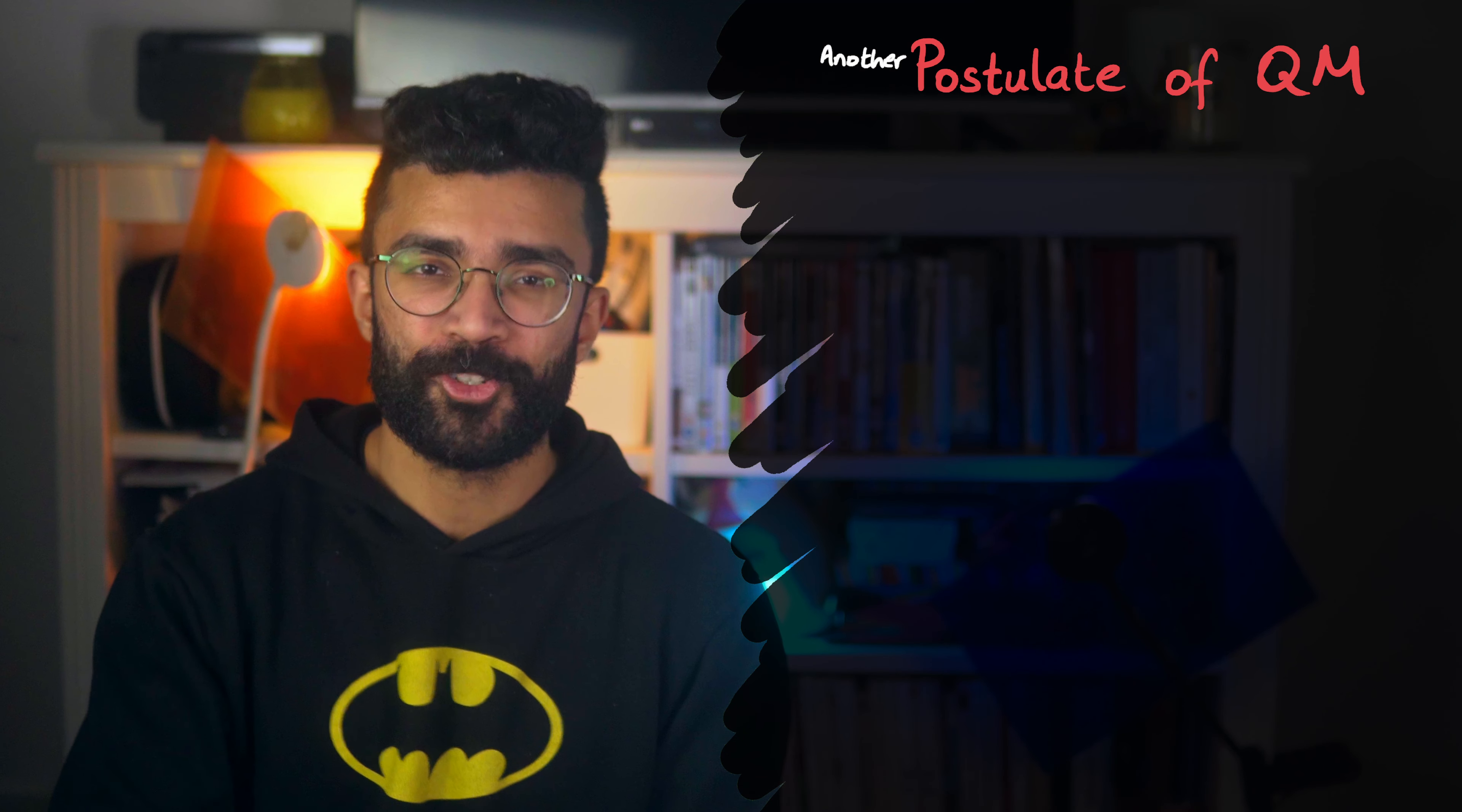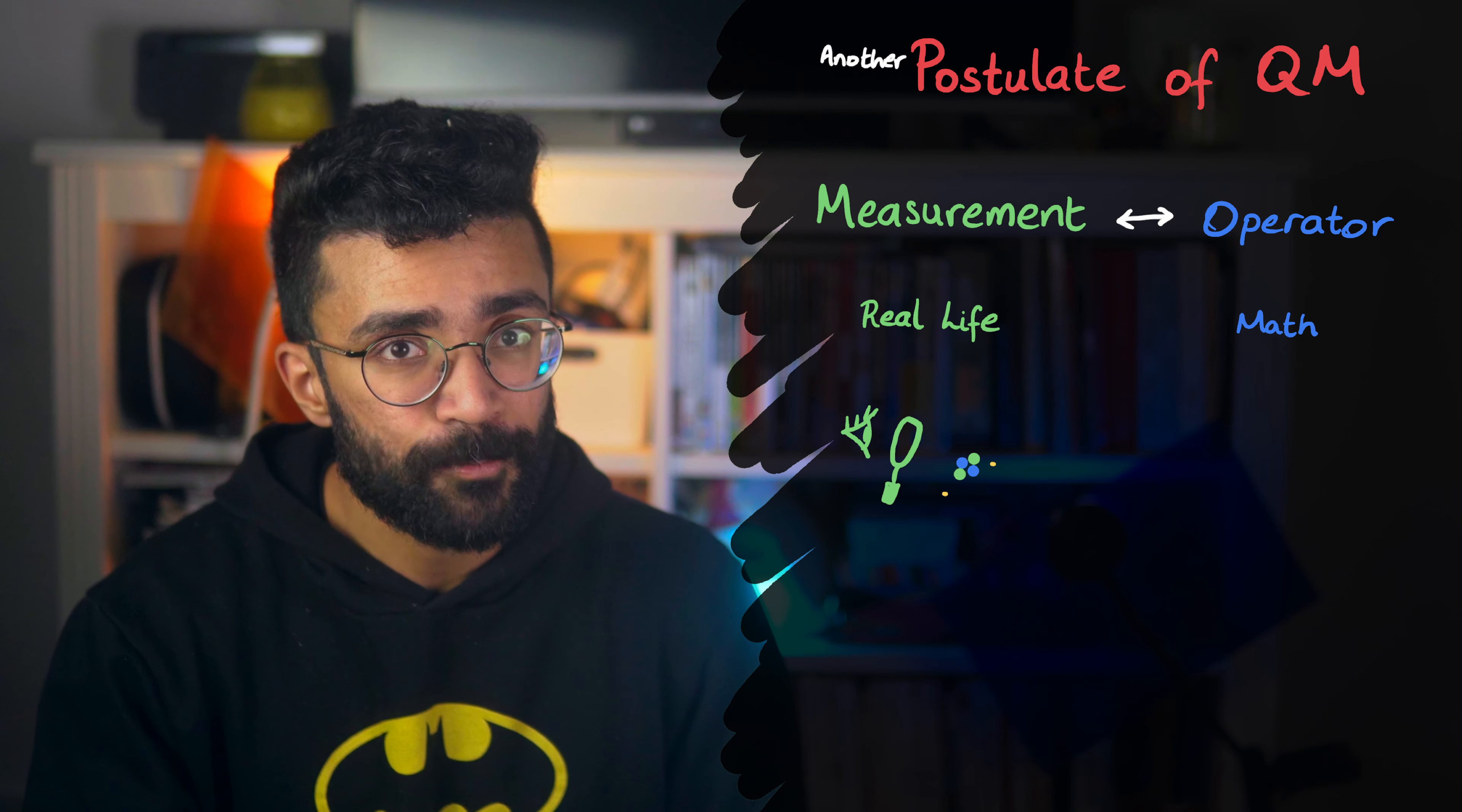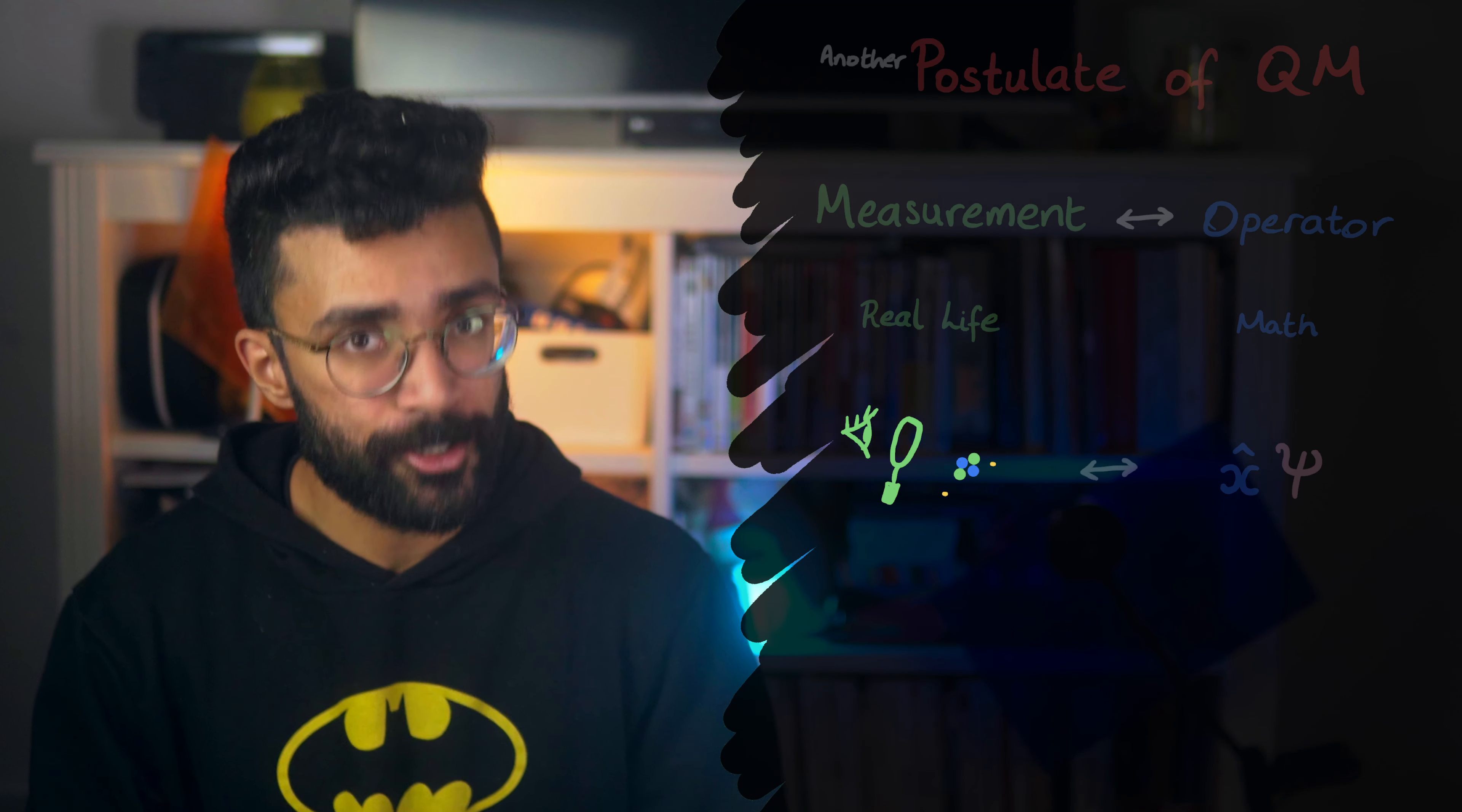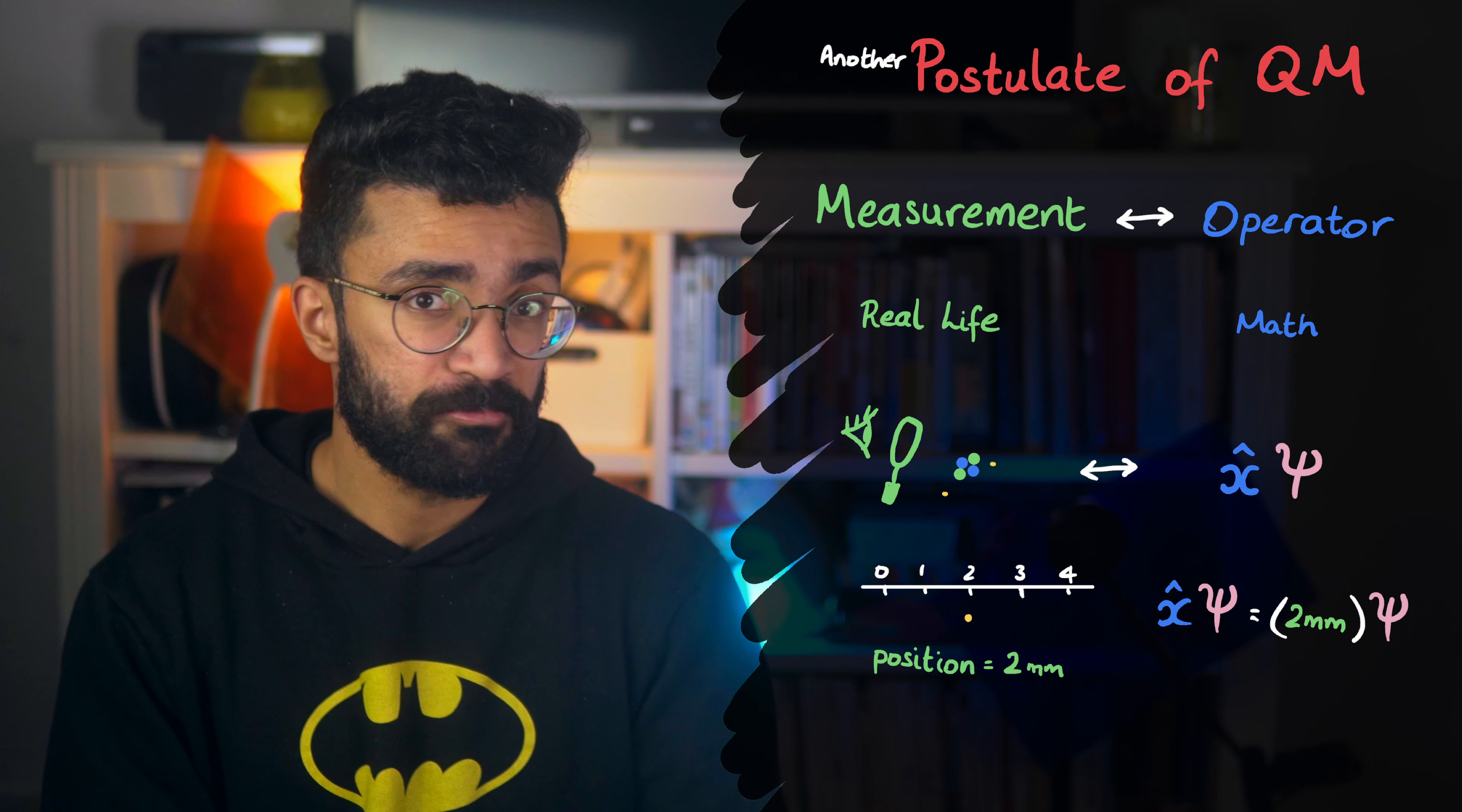Another example of this is a postulate that links together measurements we can make on the real system with these mathematical objects called operators. If we make a measurement on our real system, the mathematical equivalent is applying a particular operator to the wave function of the system. In other words, writing this is equivalent to making a measurement. And what I mean by that is that the result of this mathematically corresponds to what we would see after making a measurement in real life. But why an operator should be equivalent to a measurement, we're not so sure yet.